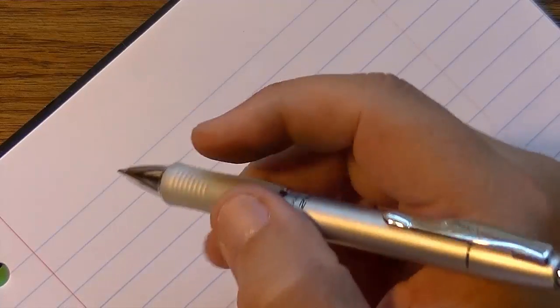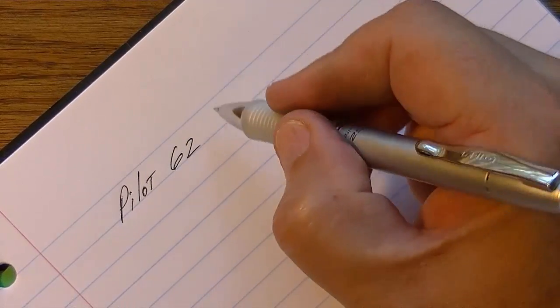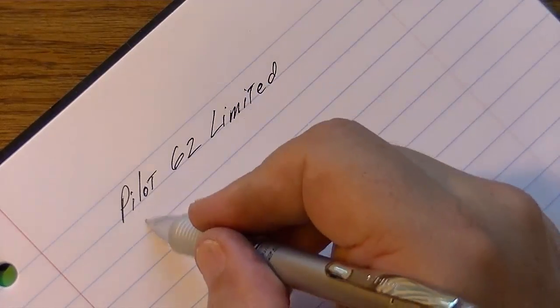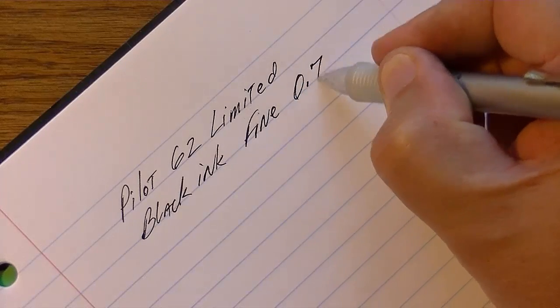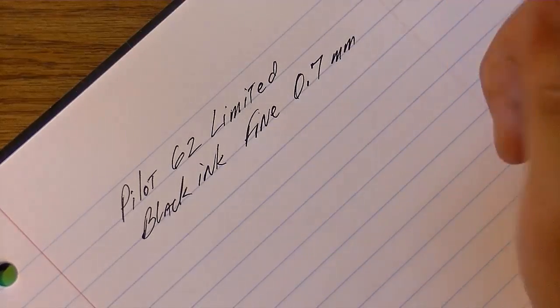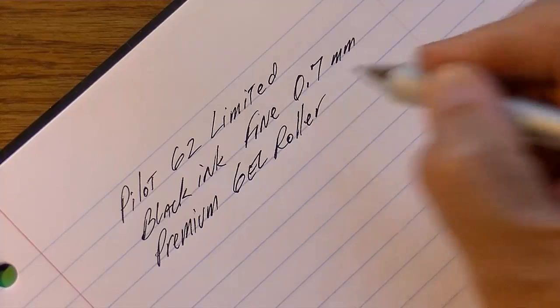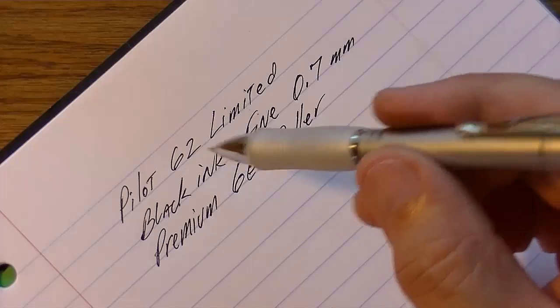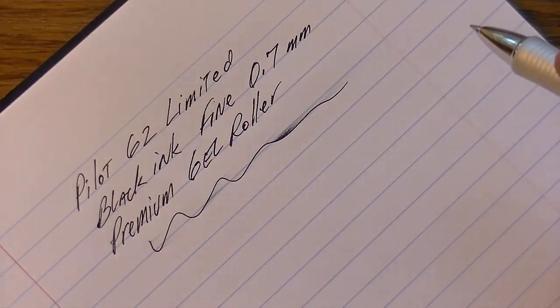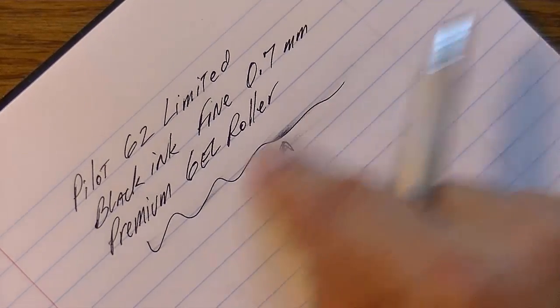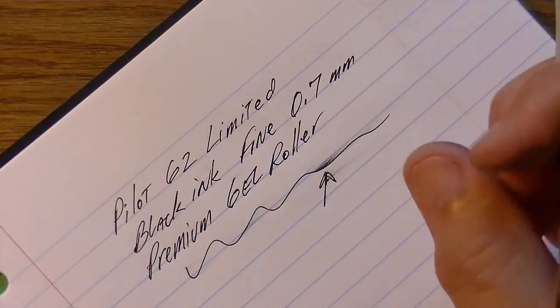So this is the Pilot G2 Limited. This is black ink. It's called a fine point at 0.7 millimeters. Then it's called a premium gel roller. All right. Now, my impression of the actual writing with the pin, the ink of the pin, it smears. As you can see right there, it smears pretty badly too.